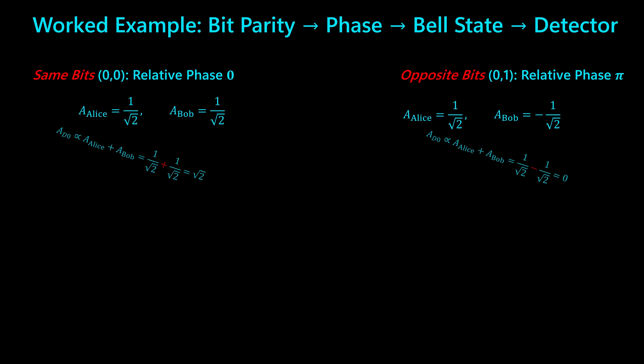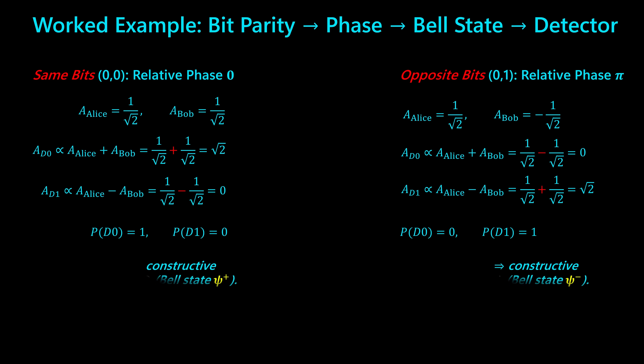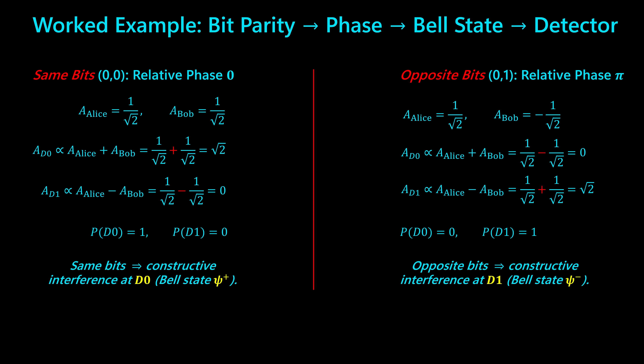Let's walk through a complete worked example that shows exactly how the bit values chosen by Alice and Bob determine the relative phase between their photons, how that phase selects a Bell state at Charlie, and how the Bell state dictates which detector clicks. We will look at two cases side by side: when Alice and Bob choose the same bit, and when they choose opposite bits.